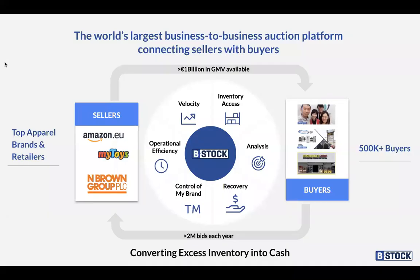So who are B-Stock Solutions? For those of you who are new to B-Stock, we are the world's largest business-to-business auction platform, connecting multiple sellers with multiple buyers. You can see on the left-hand side of this graphic some examples of the sellers that we work with across Europe — Amazon, Otto, MyToys Group, Brown, Groupon, and many apparel resellers. We drive inventory from these organizations.